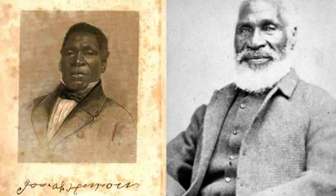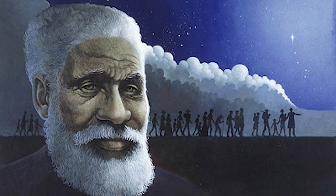Henson passed through several owners before being bought by Isaac Riley of Montgomery County, Maryland. He subsequently became a trusted overseer, and in 1825, Henson was tasked with transporting slaves to the Kentucky plantation of Riley's brother. Although there were various opportunities to escape, Henson and the slaves arrived in Kentucky later that year.